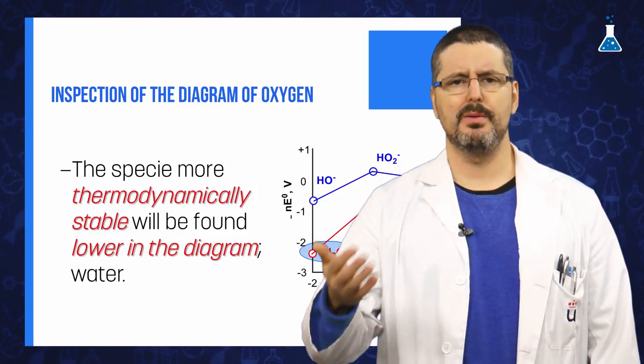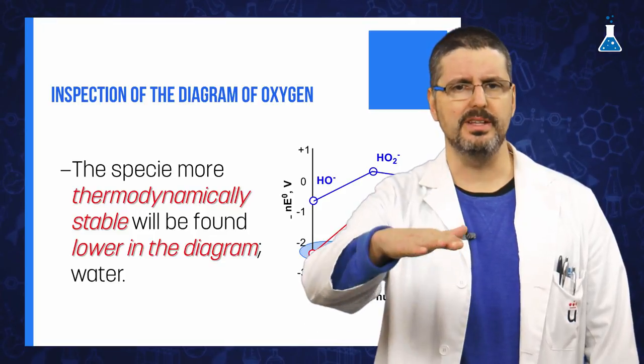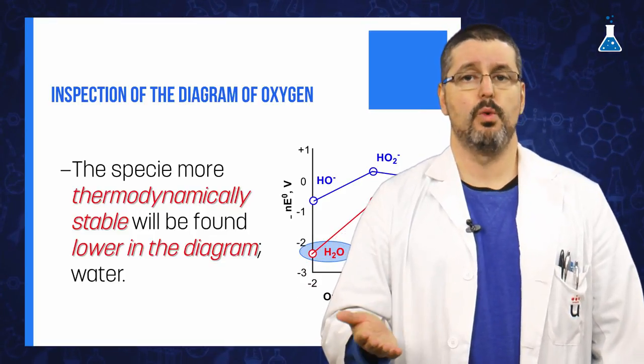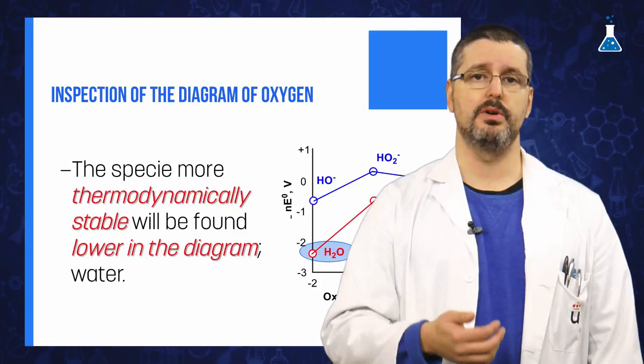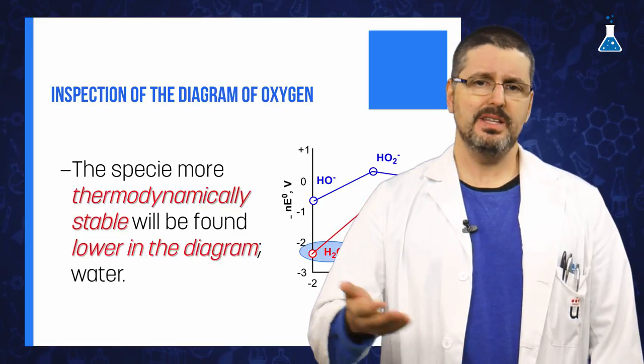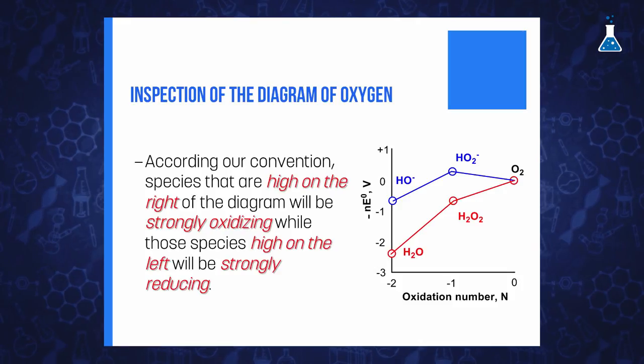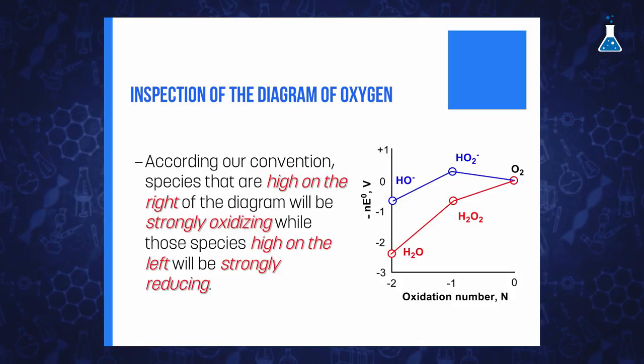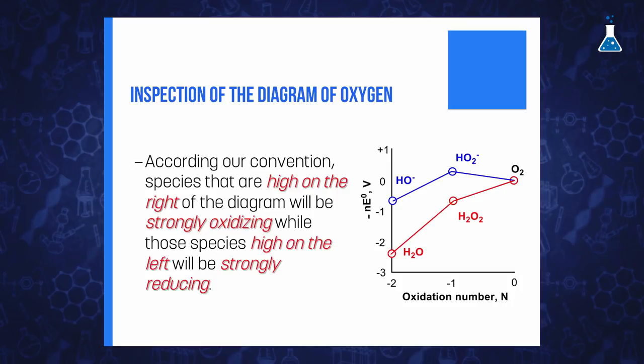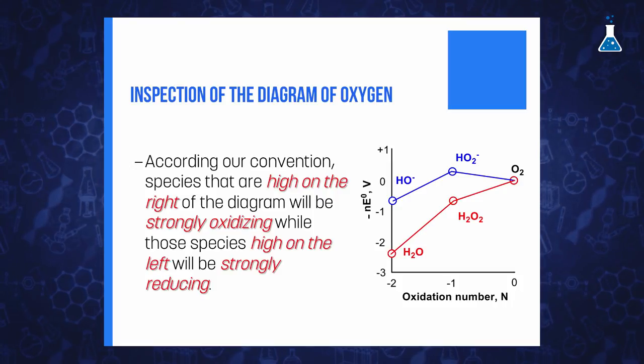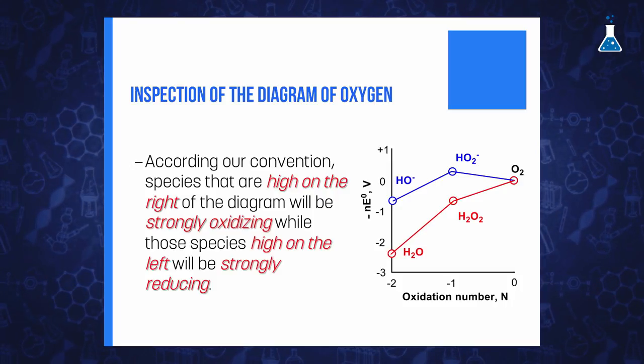The species more thermodynamically stable will be found lower in the diagram. In our case, water, which is placed in the lowest point of the diagram, must be the more thermodynamically stable species. According to our convention, species that are high on the right of the diagram will be strongly oxidizing, while those species high on the left will be strongly reducing.